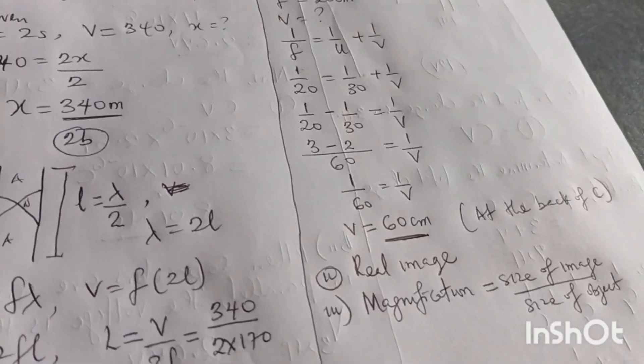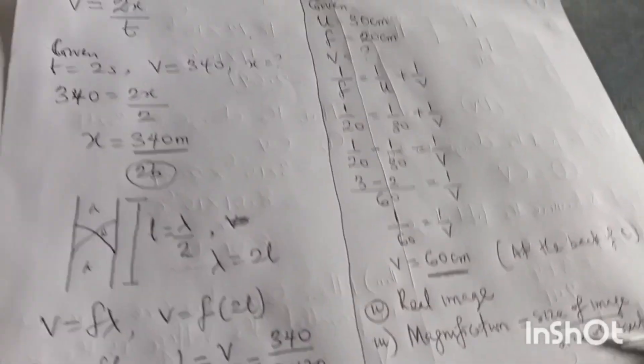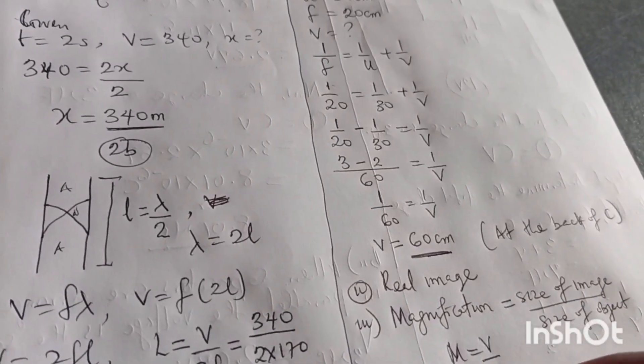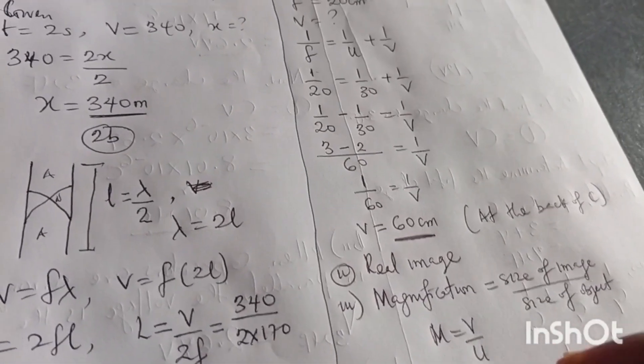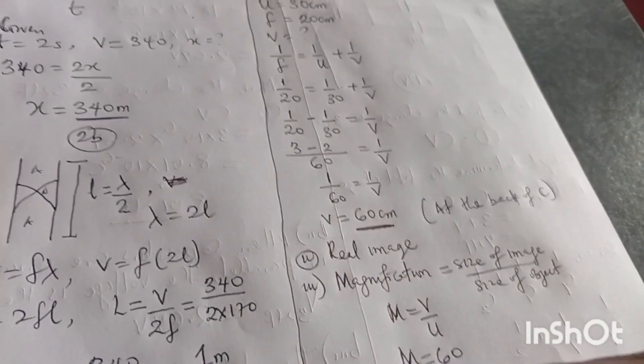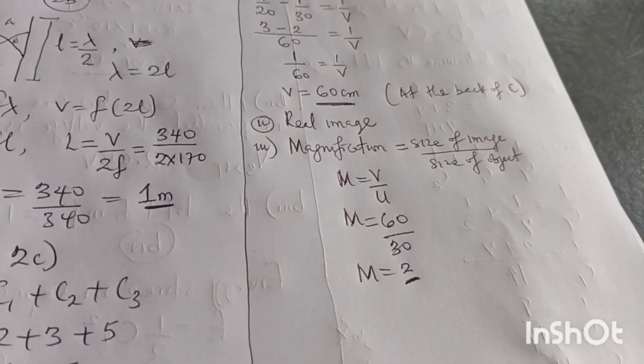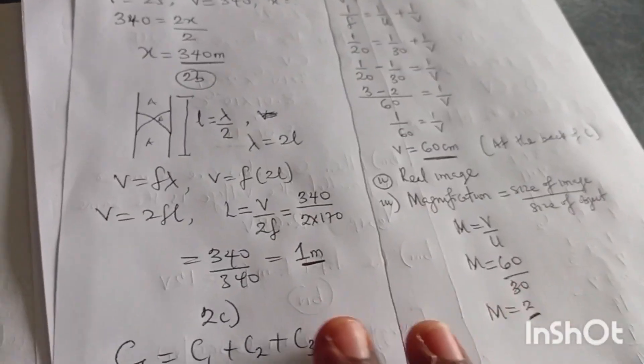And here, our size is the distance. So we have M equals to V over U, which is M equals to 60 over, what's our U? 30. M equals to 2. Magnification is 2. And that is how we settle. Question one, question two gone.